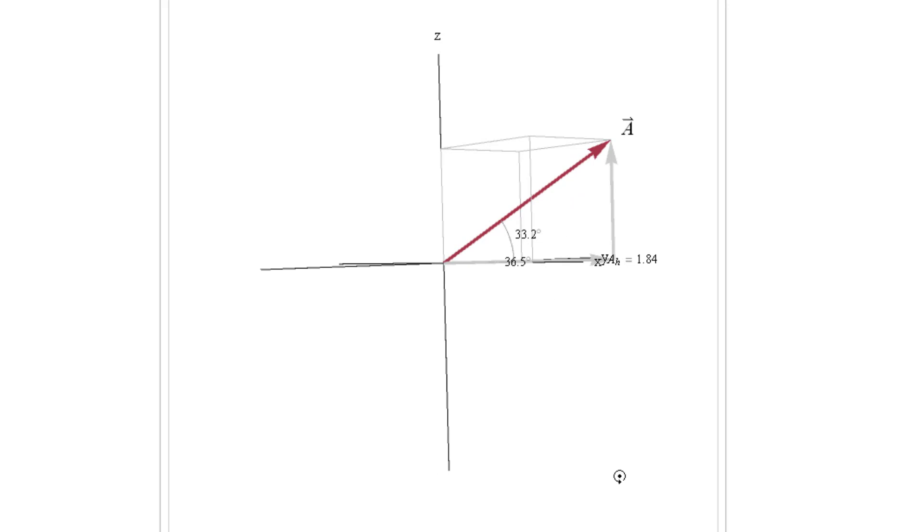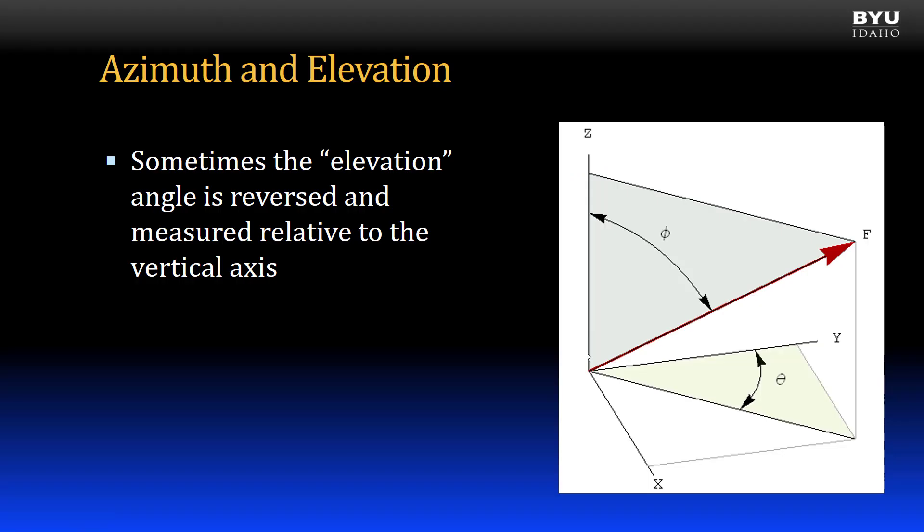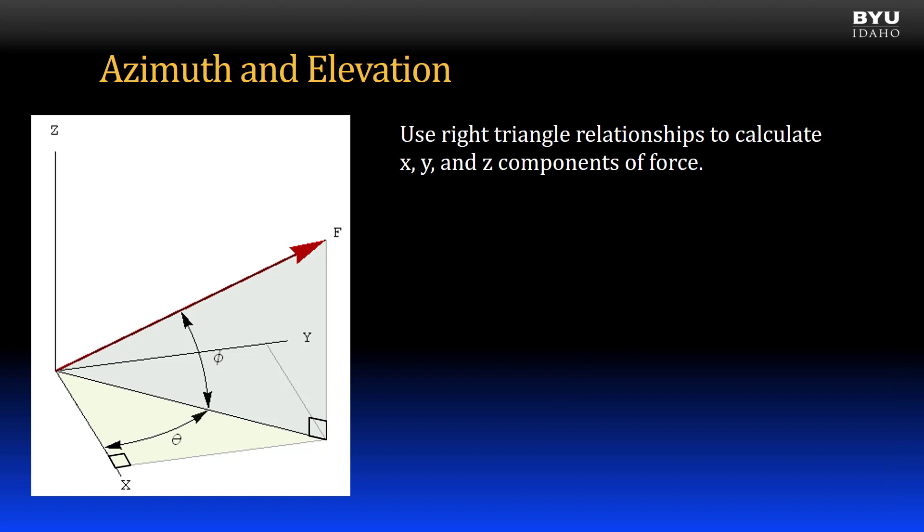When I view the vector as if I were standing on the ground, viewing parallel to the horizontal plane, I can see the angle phi showing the elevation of the vector from the horizontal. You should note that sometimes the elevation angle is reversed and measured relative to the vertical axis. The azimuth angle may be measured from either of the two axes in the horizontal plane.